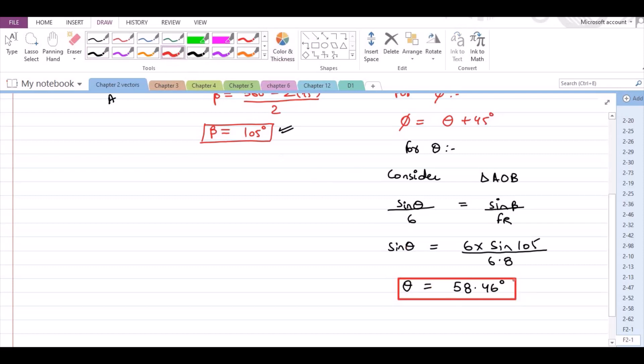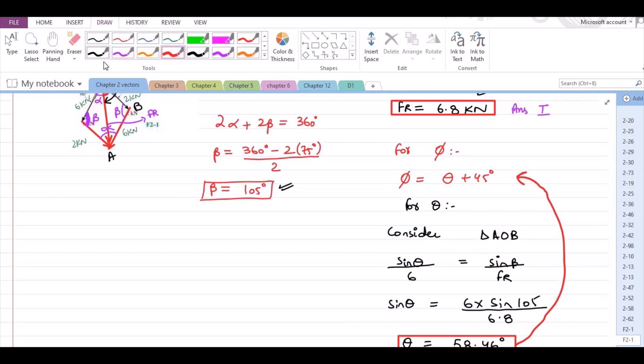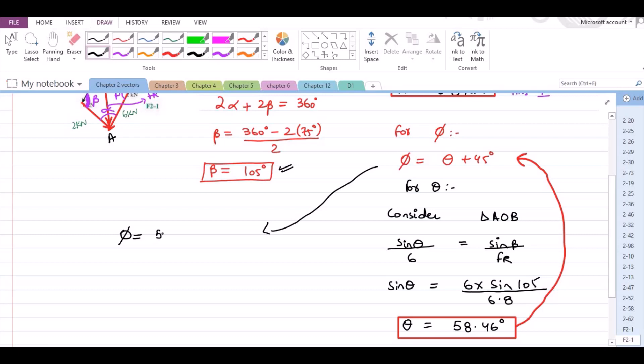Now, put this theta back in this expression right here. So, from here, we have phi is equal to theta which is 58.46 plus 45 degrees.